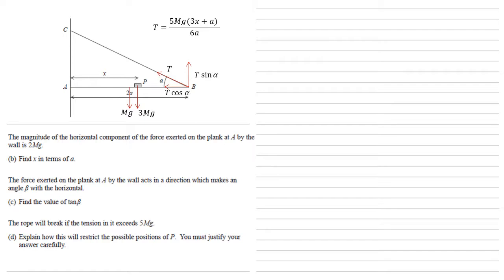We're now told that the magnitude of the horizontal component of the force exerted on the plank at A by the wall is 2Mg. We need to find x in terms of A. So let's add this force to our diagram. There's a 2Mg. It's going to the right because it is the wall acting on the plank.